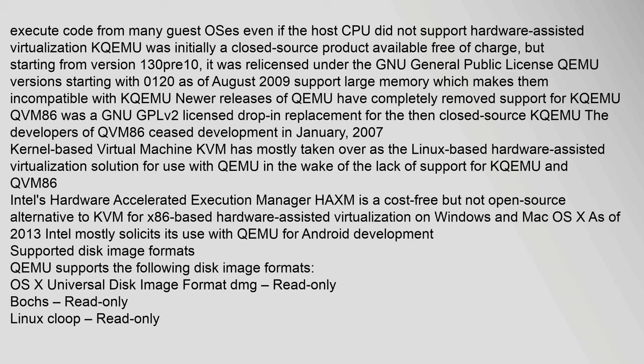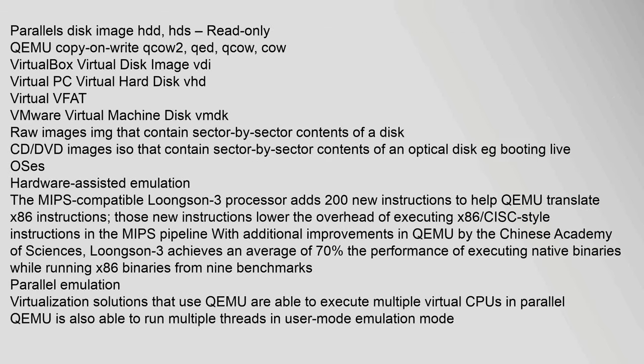QEMU supports the following disk image formats: OS X universal disk image format (DMG, read-only), BOX (read-only), Linux KLOOP (read-only), Parallels disk image (HDD/HDS, read-only), QEMU Copy-On-Write (QCOW2), QED, VirtualBox Virtual Disk Image (VDI), Virtual PC Virtual Hard Disk (VHD), VMware Virtual Machine Disk (VMDK), raw images (IMG) containing sector-by-sector contents of a disk, and CD/DVD images (ISO) containing sector-by-sector contents of an optical disk.